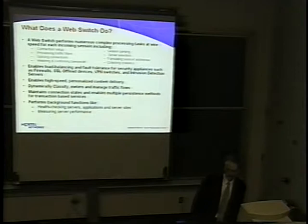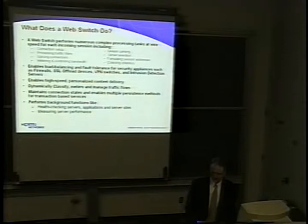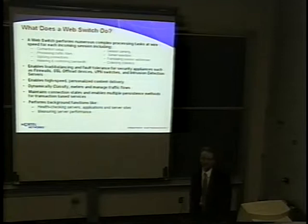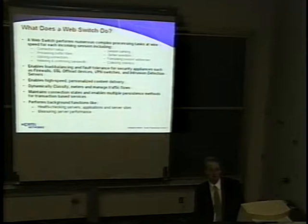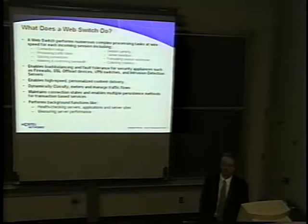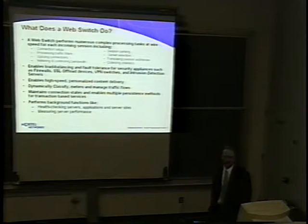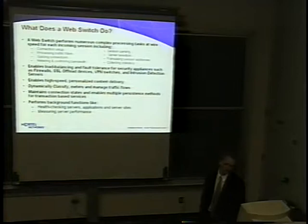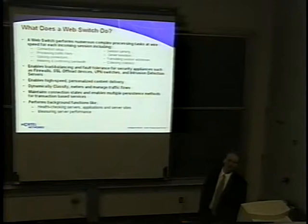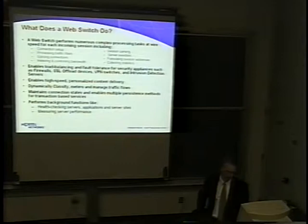So what exactly is done with all this processing power? The web switch performs numerous complex tasks at wire speed for each incoming session, including TCP connection setup, processing of traffic rules and filters, session parsing, and server selection based on load balancing metrics. It enables load balancing and fault tolerance for security applications such as firewalls, SSL offload devices, VPN switches, and intrusion detection servers. It enables high-speed personalized content delivery through layer 7 content awareness, and can dynamically classify, meter, and manage all traffic flows. It maintains connection states and enables multiple persistence methods, and performs background health checking of servers, applications, or entire websites and server farms.